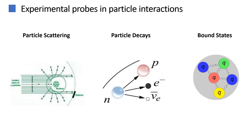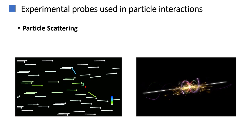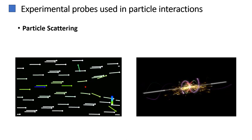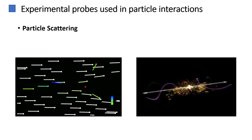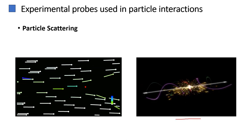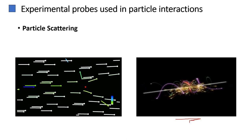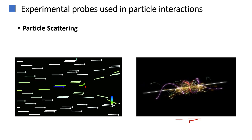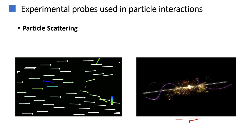What then are the experimental probes for particle interactions? Particle physicists explore the subatomic realm through experimental probes, focusing on particle scattering, decays, and bound states. Particle scattering involves colliding particles together and observing the outcomes. High-energy particle accelerators, like the Large Hadron Collider, LHC, at CERN, accelerate particles to high speeds and smash them into targets or other accelerated particles. By analyzing the scattering patterns and the particles produced, scientists can infer information about the fundamental forces, constituents of matter, and their interactions.